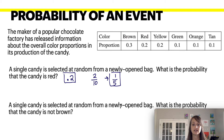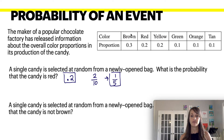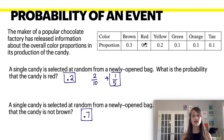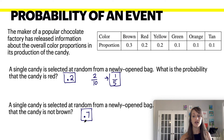A single candy is also selected at random — what is the probability that the candy is not brown? If brown has a probability of 0.3, then not brown would be 0.7. Why? Because all probabilities must add up to 1 (or 100%). Adding all color probabilities: 0.3 + 0.2 + 0.2 + 0.1 + 0.1 + 0.1 equals 1. So if 30% are brown, then 70% or 0.7 must be any of the other colors.